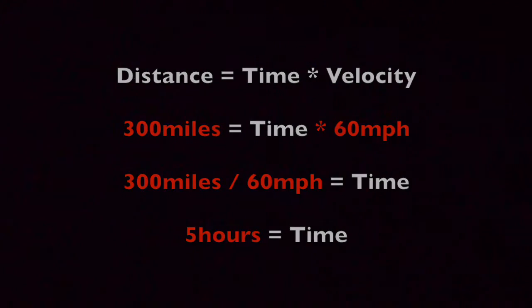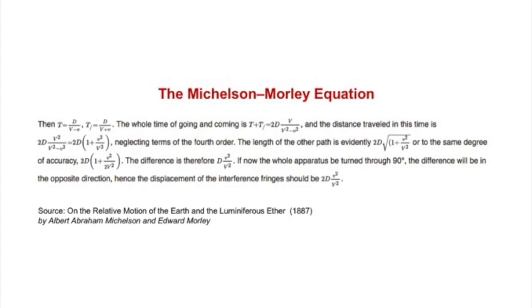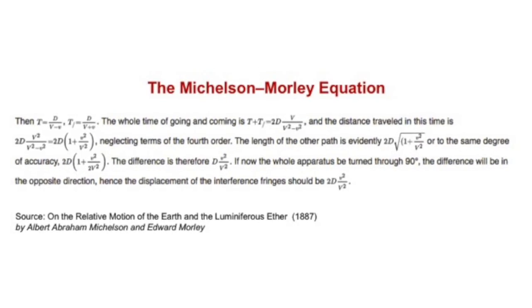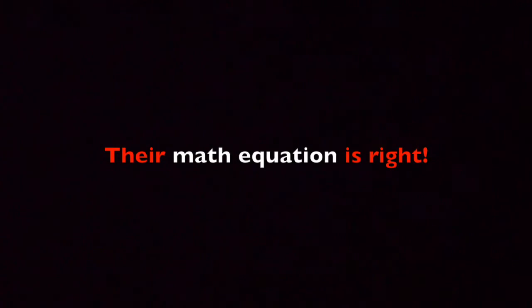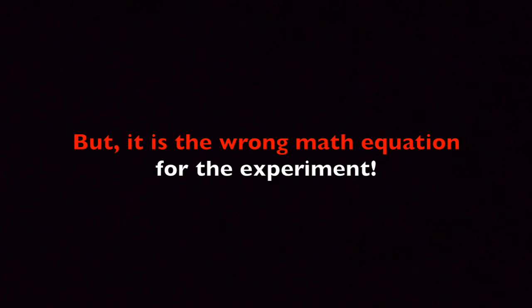Michelson and Morley used a version of this equation in their experiment. And here's where things get interesting. Because if you look for an obvious mistake in their equation, you will not find one. That's right, their math is right. It just happens to be the wrong math for this experiment.